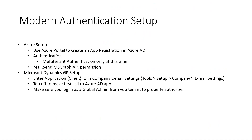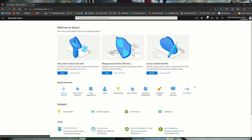There are two sides to setting up Modern Authentication: first on the Azure side, and then second on the Dynamics GP client side. Let's take a look at what that looks like on the Azure side first. Here we are at the Azure portal.